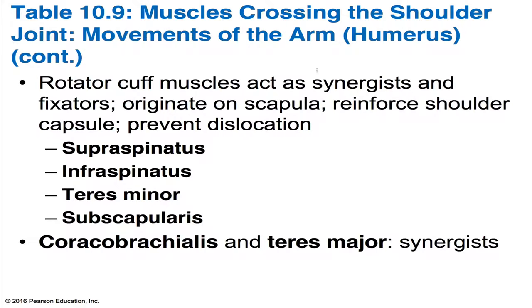Muscles originating anterior to the shoulder joint — the pectoralis major, the coracobrachialis, and the anterior fibers of the deltoid — flex the arm. The prime mover of arm flexion is the pectoralis major, assisted by the biceps brachii. Muscles originating posterior to the shoulder joint extend the arm: these include the latissimus dorsi, the posterior fibers of the deltoid, and the teres major. The latissimus dorsi and pectoralis major are antagonists in flexion and extension. The middle region of the deltoid is the prime mover of arm abduction.